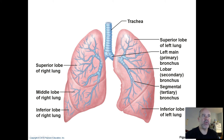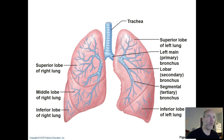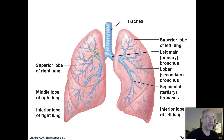The trachea divides into two primary bronchi. You have one headed over toward the left lung and a short stumpy one headed toward the right lung. That larger primary bronchus on each side divides into multiple secondary bronchi — for example right there and up here. Each of those leads to one of the lobes of the lungs.